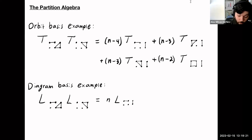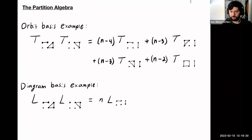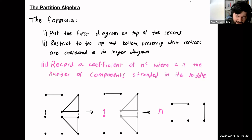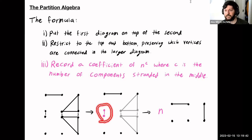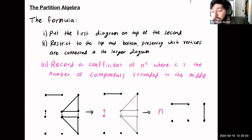I do need to address the one difference from the monoid structure I gave you earlier — where this n is coming from. We slightly amend our product: we're still going to put the first diagram on top of the second and restrict to the very top and bottom. But now we need to account for components stranded in the middle that don't touch the very top or very bottom. To record those, we include a coefficient of n — our dimension of Vn, also the n for our Sn — for every component that was stranded in the middle.